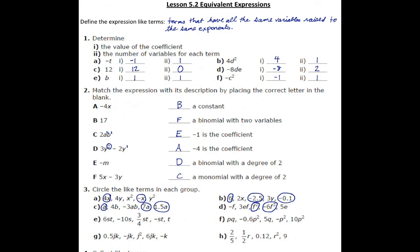Next, we've got part E. We have 6ST — the next term doesn't have a T in it, so we're not going to include that. We've got three-quarters ST, so that's a like term. And we've got a negative ST, so that's a like term as well. The last term has T but no S, so it's not a like term.